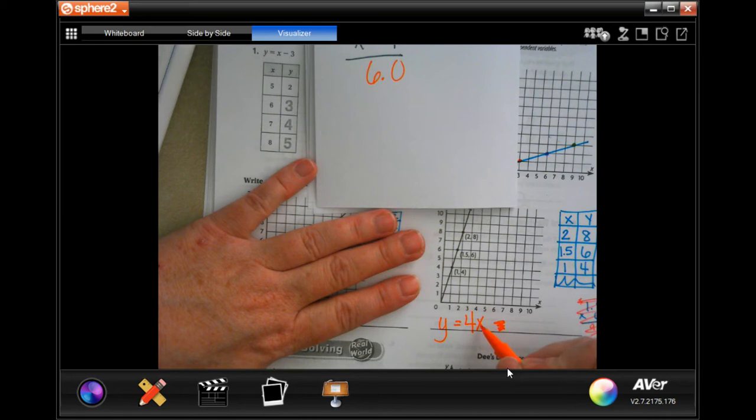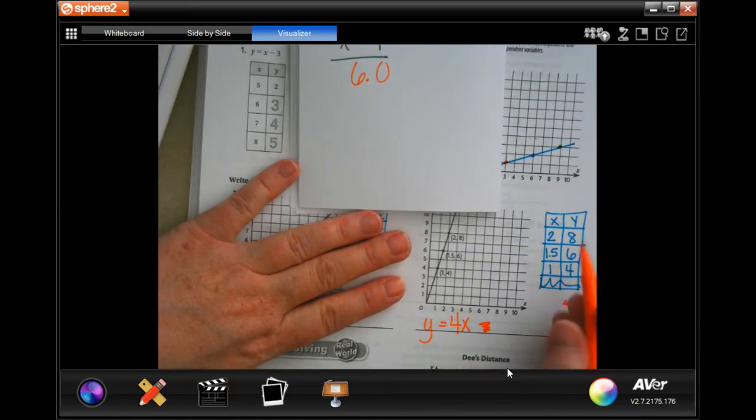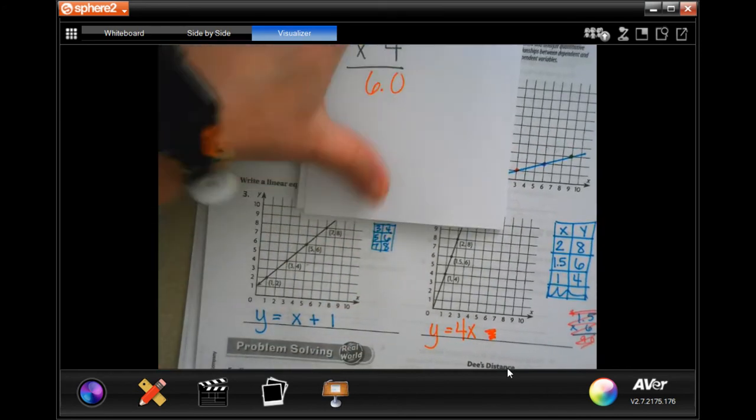So that means that y equals x times four, or I guess instead of x times, four x. It's four times x. Four x is the same thing as four times x, so x times four is equal to y.